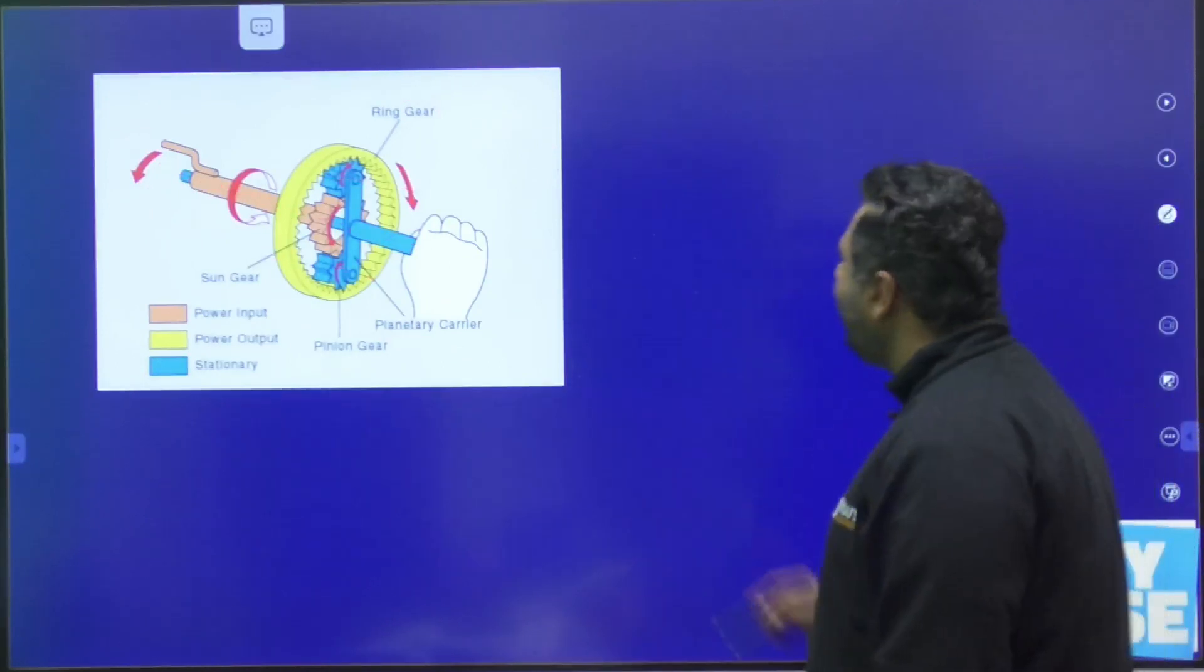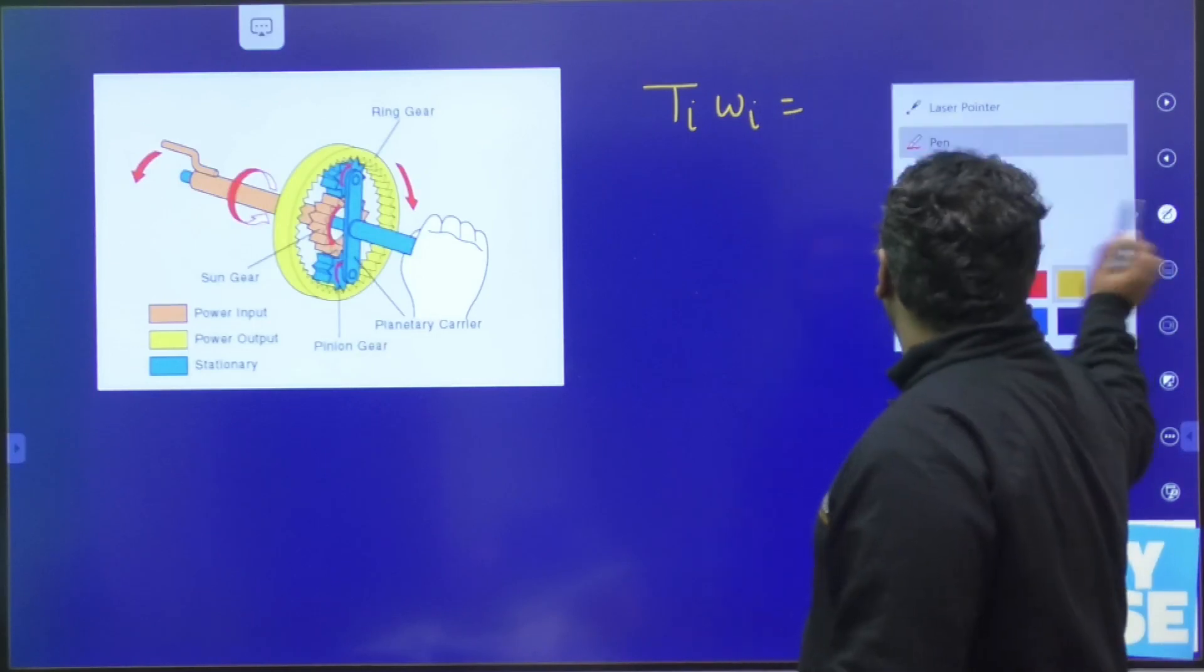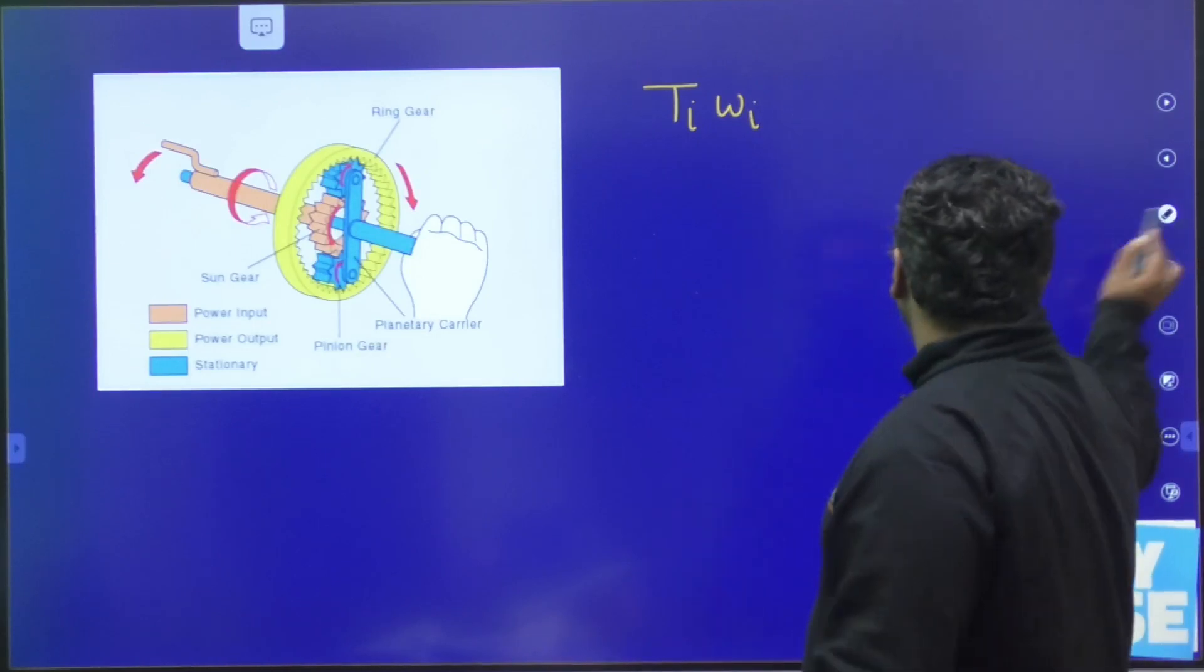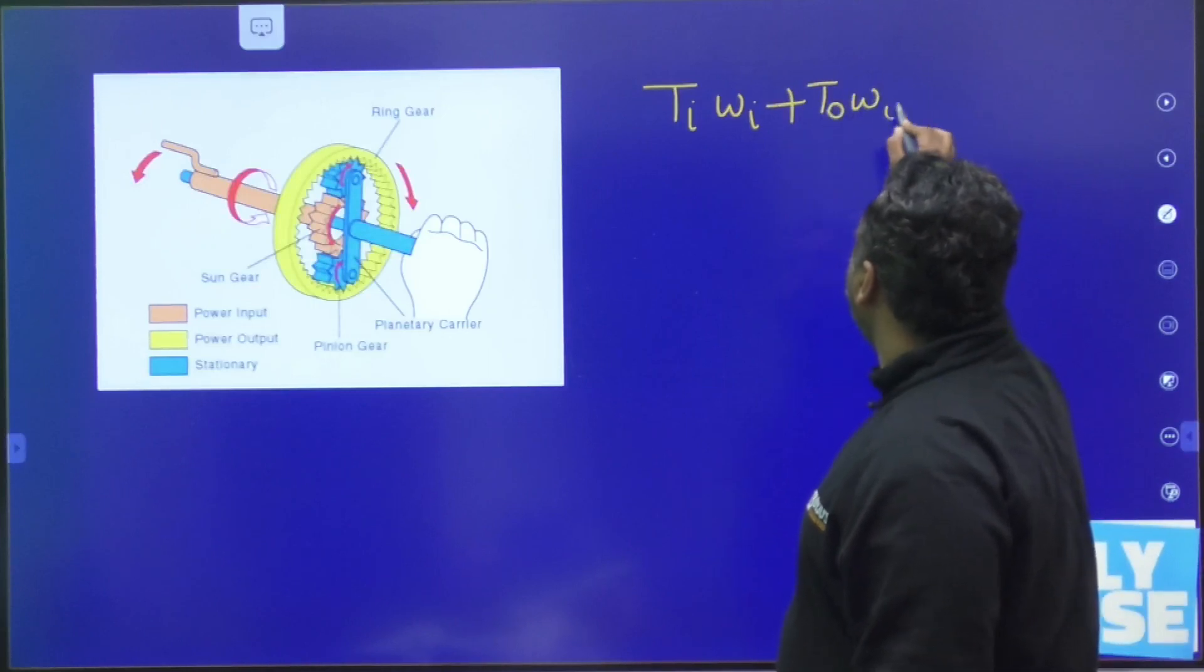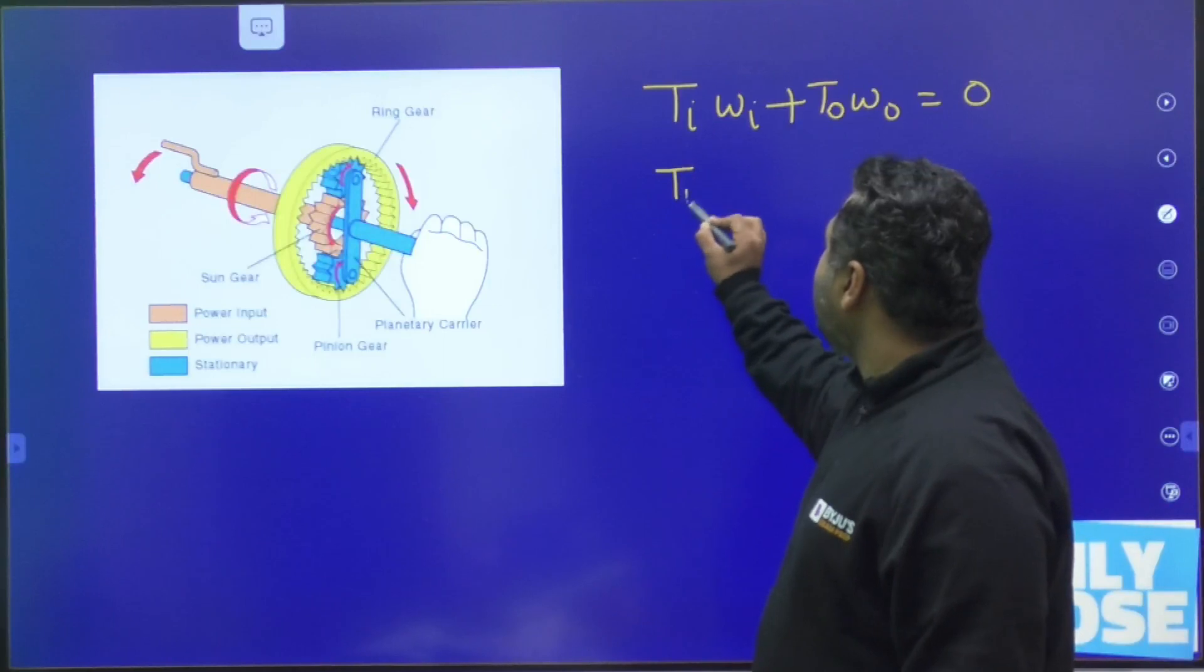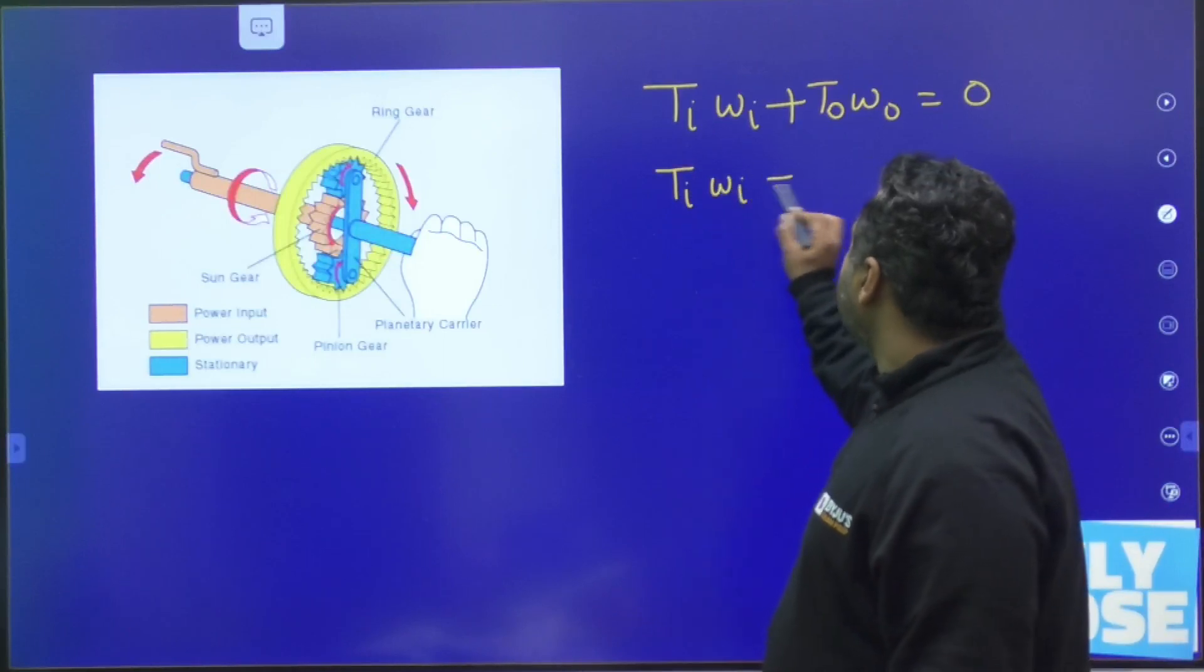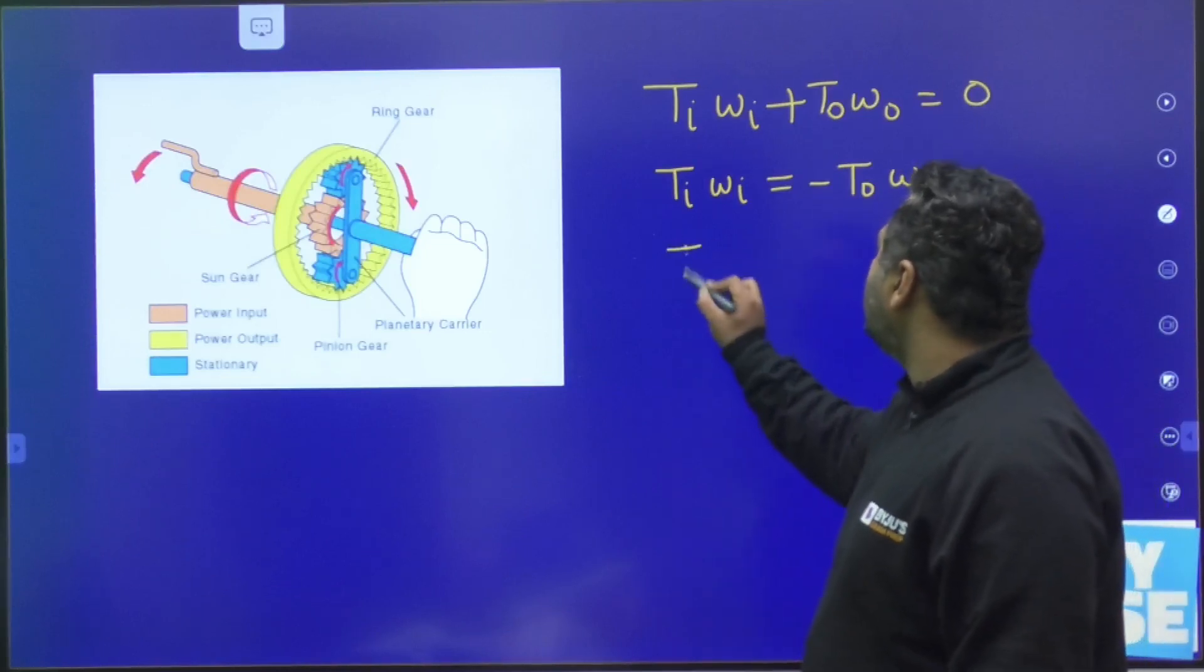Using this equation, what we can write: T_i omega_i plus T_o omega_o is equal to zero. So if you are writing this, you can also write it T_i omega_i can be written as minus T_o omega_o. And from here, you can definitely find out the T_o value.